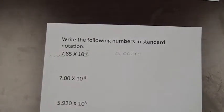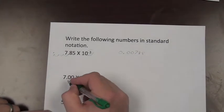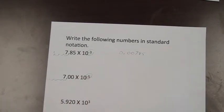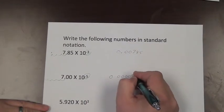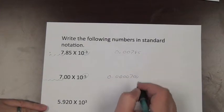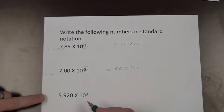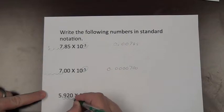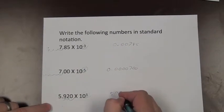For the next one with a negative 5 exponent, we move the decimal five places to the left, giving us 4 zeros, so this becomes 0.0000785. For the last one with a positive 3 exponent, we move the decimal to the right 1, 2, 3 places, so this becomes 5,920.